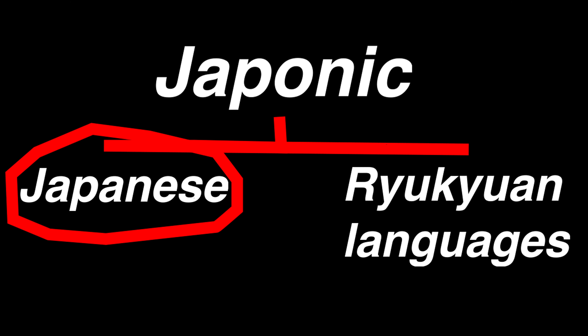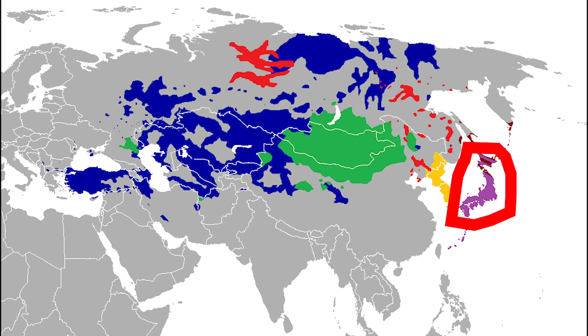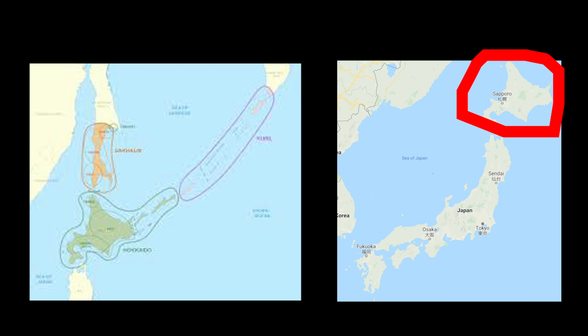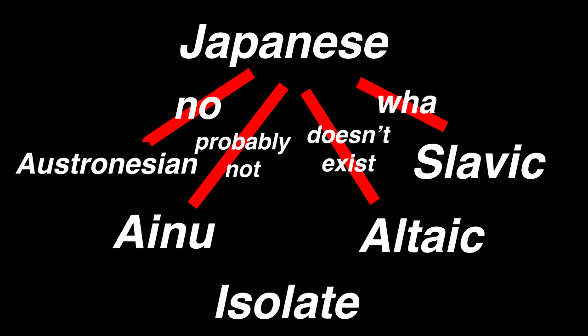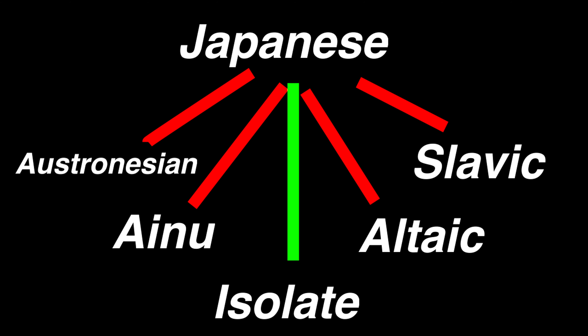It's a member of the Japonic language family, along with the dying Ryukyuan languages of the Ryukyuan Islands. No one's really sure what other languages Japanese is related to. Some say it's Altaic and related to Korean, but this is widely discredited among linguists. Some say it's Austronesian, making it related to Indonesian and Filipino. And some say it's related to Ainu, spoken in the northern Japanese island of Hokkaido. None of these theories are widely credited, so people mainly class Japanese as a language isolate.